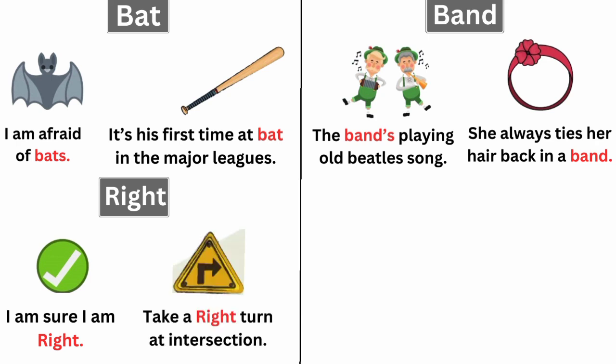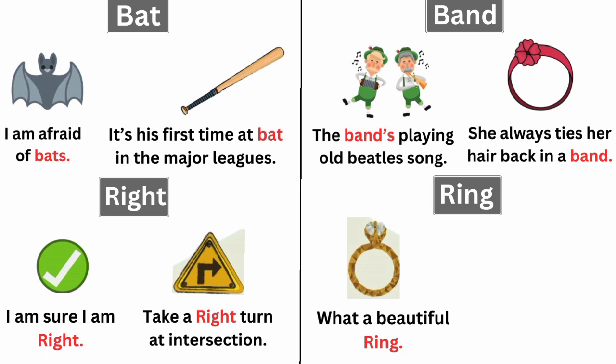There is another meaning of right that indicates direction. Take a right turn at the intersection. The next one is ring. Ring is a round band worn as ornamental jewelry. What a beautiful ring.